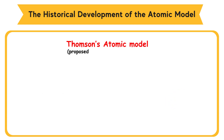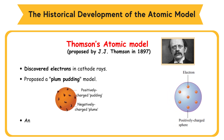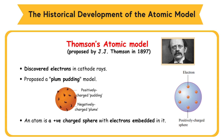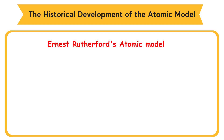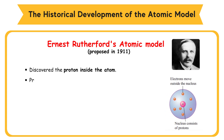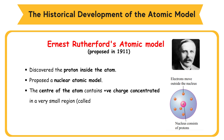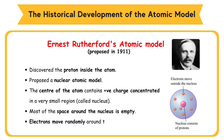Thomson's Atomic Model, proposed by J.J. Thomson in 1897: he discovered electrons in cathode rays. He proposed the plum pudding model — an atom is a positively charged sphere with electrons embedded in it. Ernest Rutherford's atomic model, proposed in 1911, discovered the proton inside the atom. He proposed a nuclear atomic model: the center of the atom contains positive charge concentrated in a very small region called the nucleus. Most of the space around the nucleus is empty, and electrons move randomly around the nucleus.